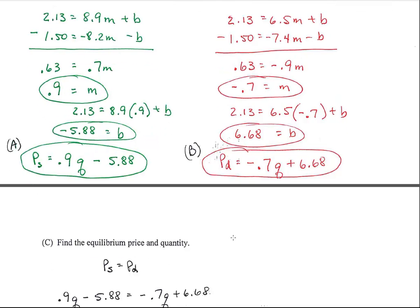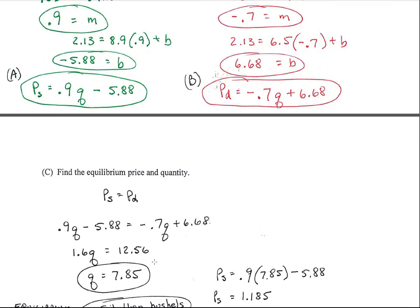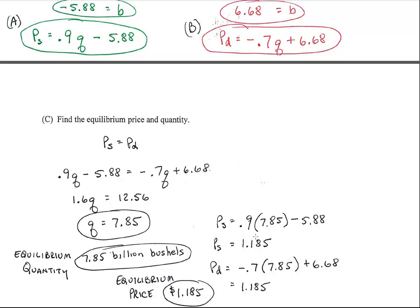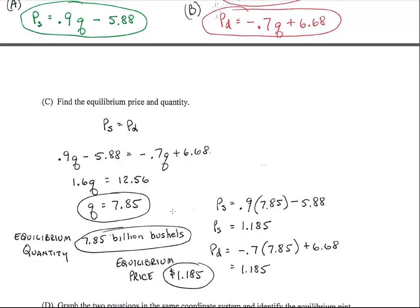So I set the two equal to one another. Solving for Q, I come up with my quantity is 7.85. Substitute it into either one. I just chose—actually I put them in both, but I didn't have to. I just wanted you to see that they were the same. So my equilibrium quantity is 7.85 billion bushels. My equilibrium price is $1.185.